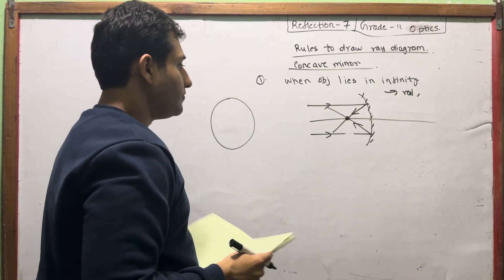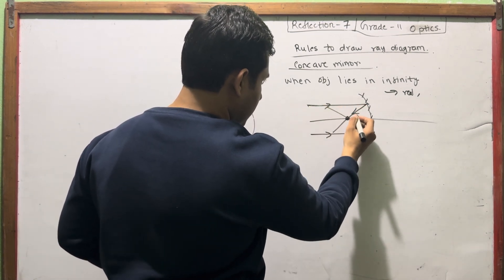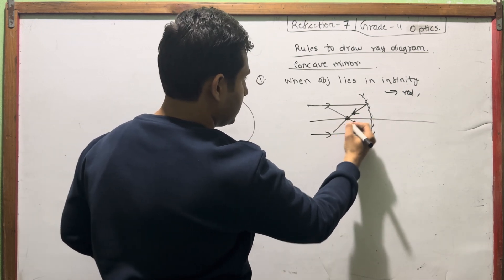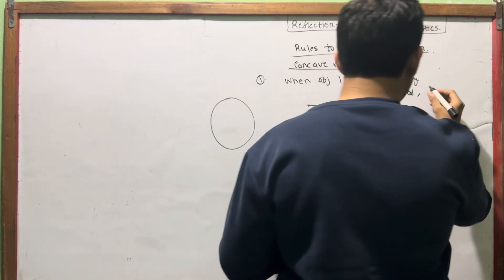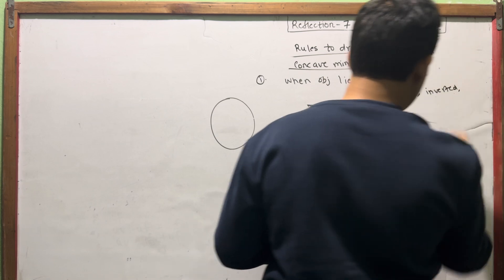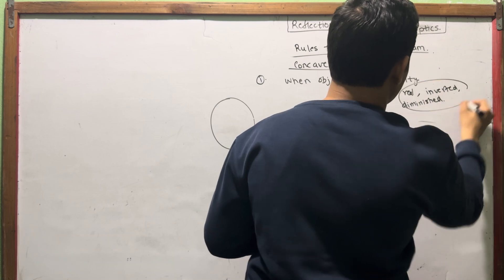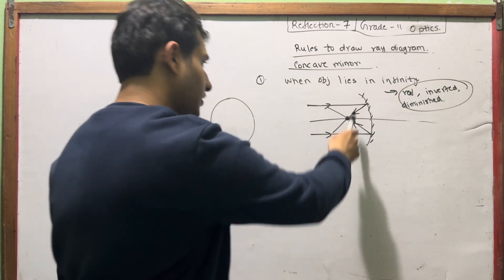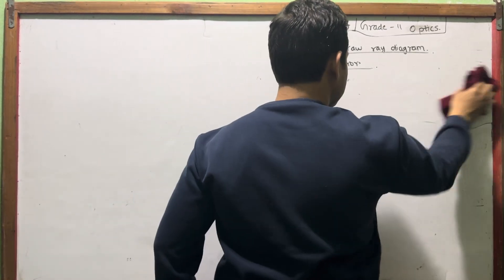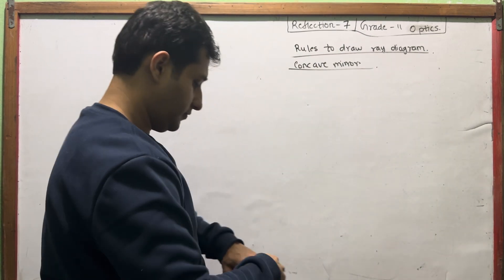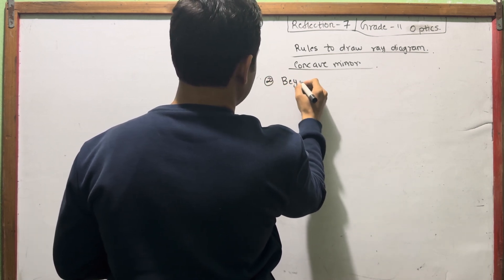The lights are here — this is the light. The image is inverted. What is number 2? It is called Beyond 2F. So it is called Beyond 2F — here is F and here is 2F. If the object is beyond 2F, it is called Beyond 2F.